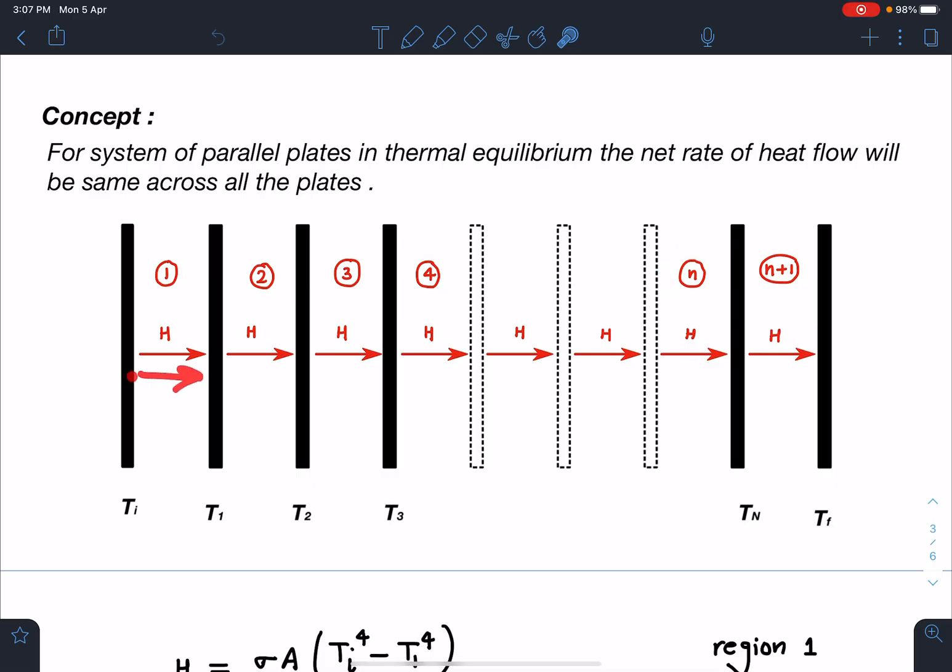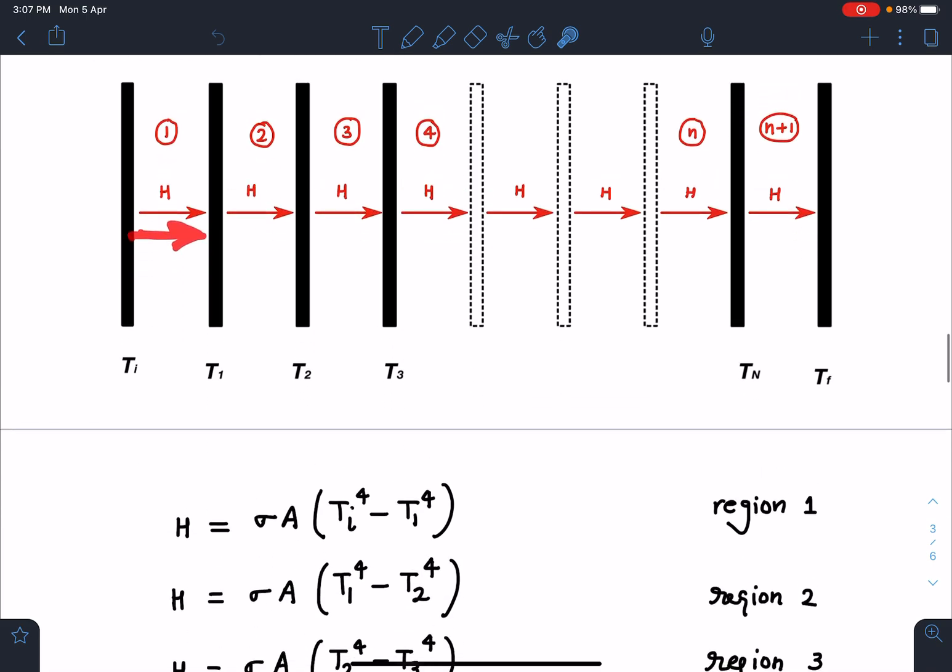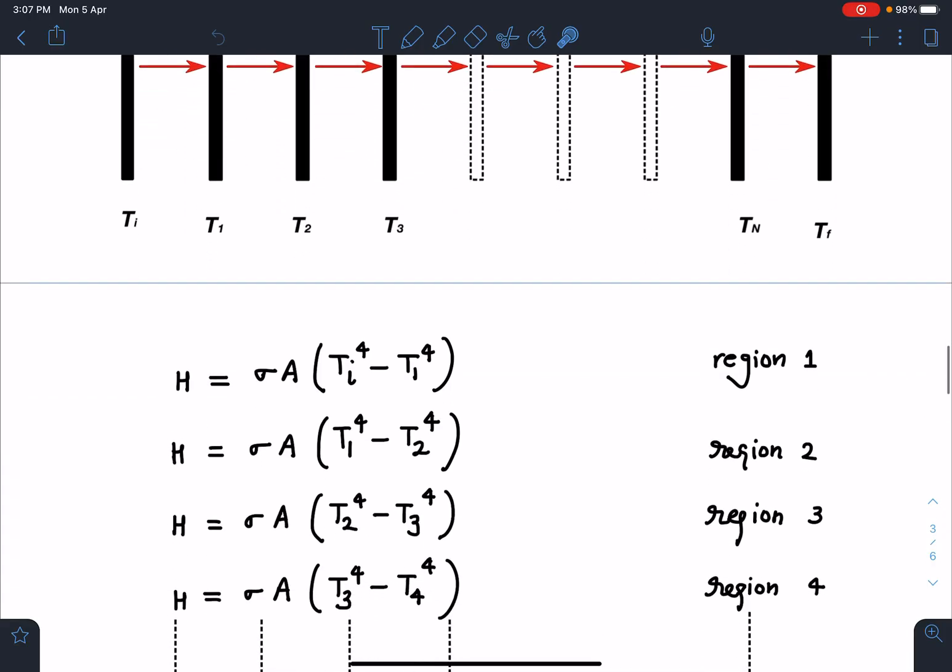Net heat transfer here, let's say that is H. So H value I can write between these two Ti and T1 plates: sigma A Ti to the power 4 minus T1 to the power 4. We are using Stefan's law and I am assuming because they are given as black plates so I am using emissivity as 1. That is the equation in region 1. Similarly, for region 2 I can write T1 to the power 4 minus T2 to the power 4.